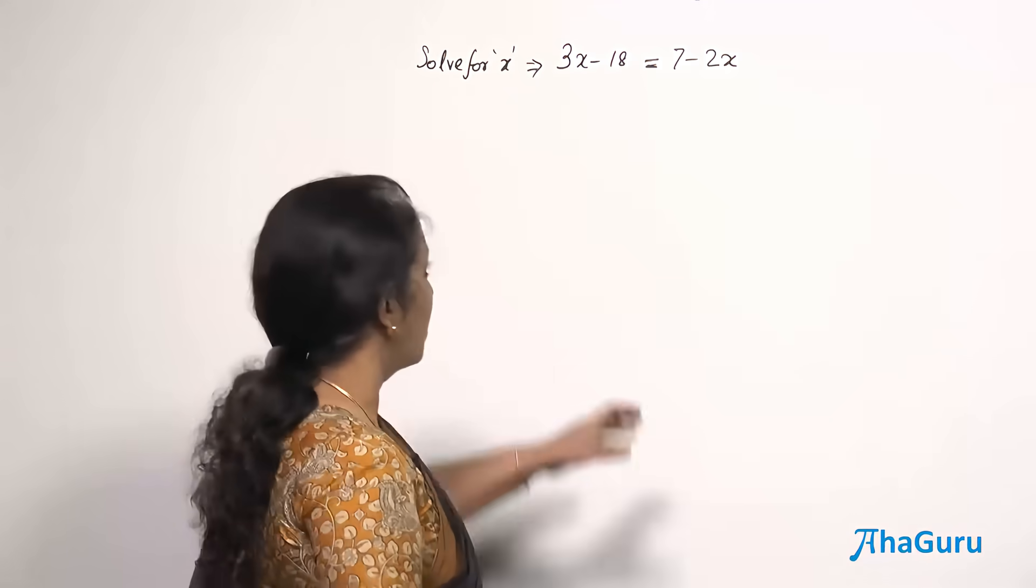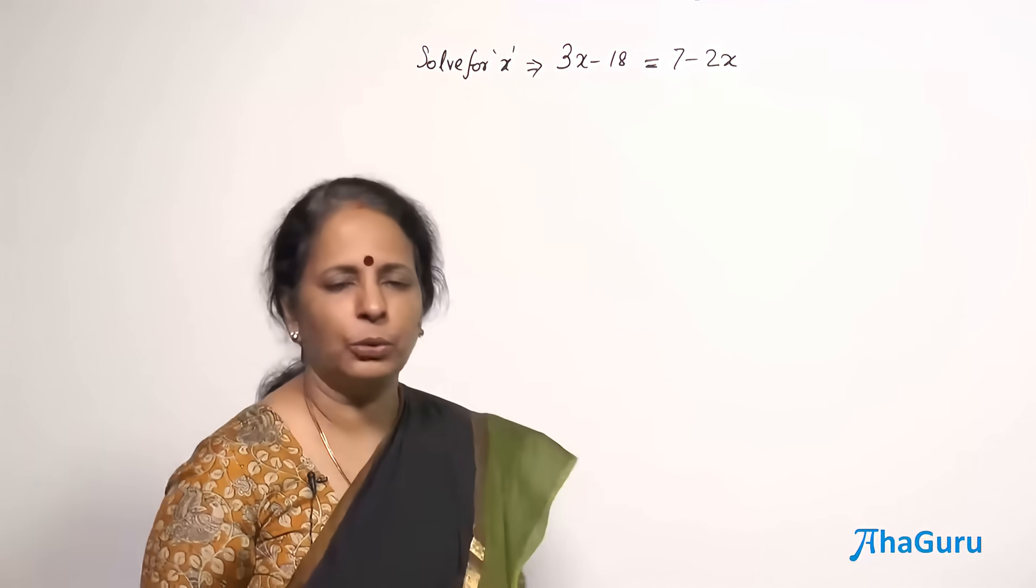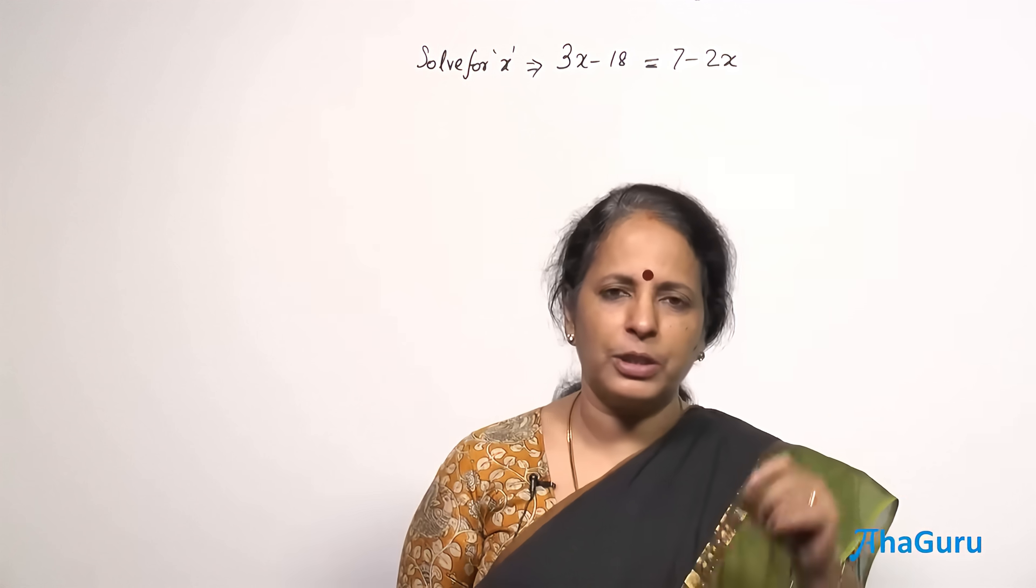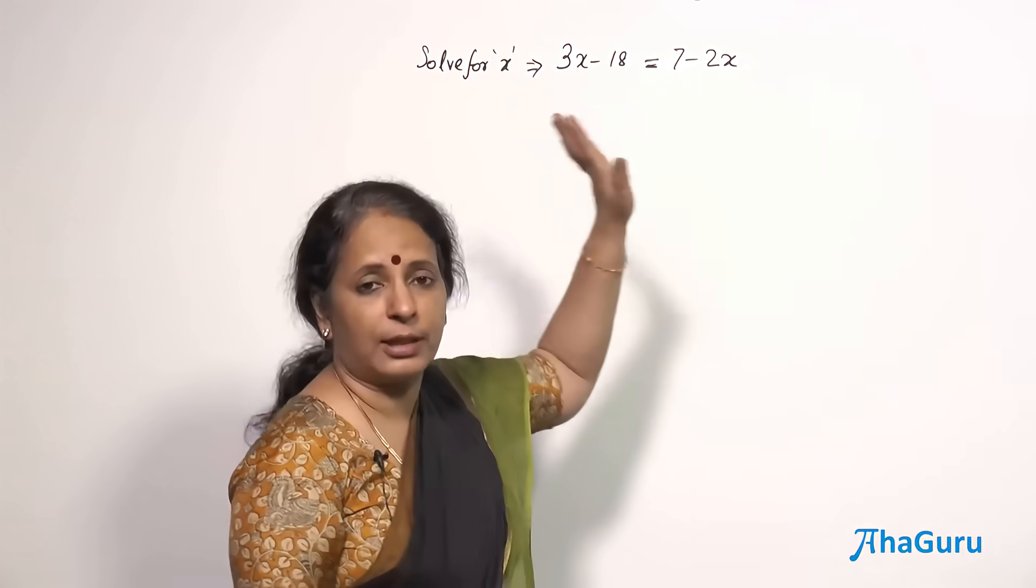And why is it linear? Because the highest power of x is 1. So such equations are known as linear equations. All linear equations are having only one solution. There is only one value of x which will satisfy this.